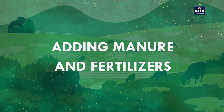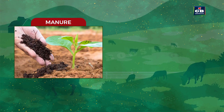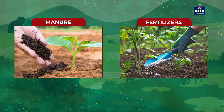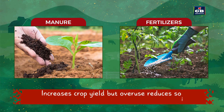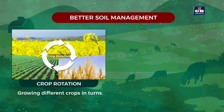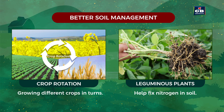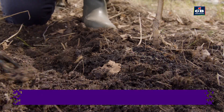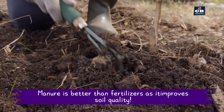Adding manure and fertilizers. Manure is organic, made from plant and animal waste, and it improves soil health. Fertilizers are chemical nutrients like urea and NPK — they increase crop yield, but overuse reduces soil fertility and pollutes water. Soil can be managed better by crop rotation — growing different crops in turns — and by growing leguminous plants like peas, which fix nitrogen in soil. Manure is better than fertilizers as it improves soil quality.